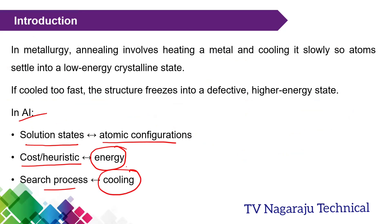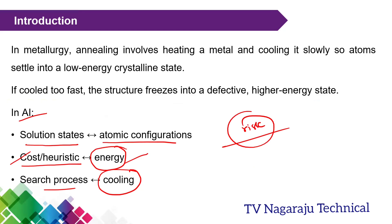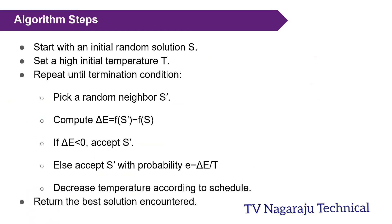The searching process maps to cooling. If you cool fast or slowly, energy variations occur accordingly and the cost may change. If you cool too quickly, there is a risk of freezing into a local minimum. If you are cooling too slowly, the algorithm may run for a long time but it may avoid the local optimum. I will explain this further with the algorithm.